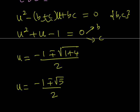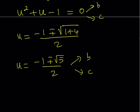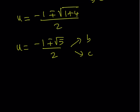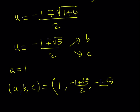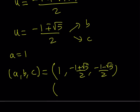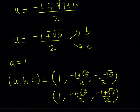So b can be negative 1 plus root 5 over 2 and c the other value, or vice versa. The ordered triple (a, b, c) is either (1, (−1+√5)/2, (−1−√5)/2) or (1, (−1−√5)/2, (−1+√5)/2), since b and c are interchangeable but a has a fixed value.